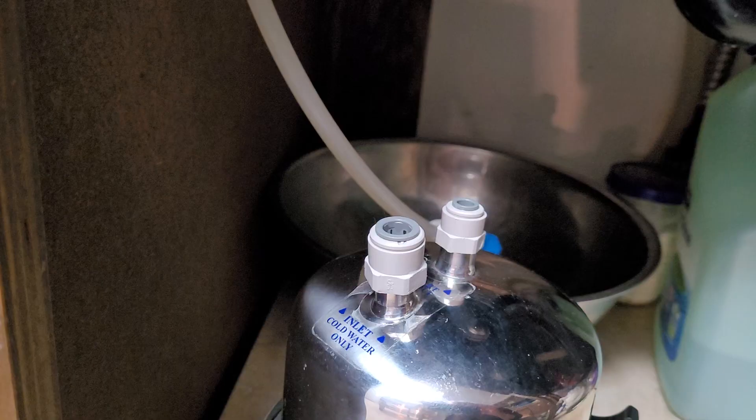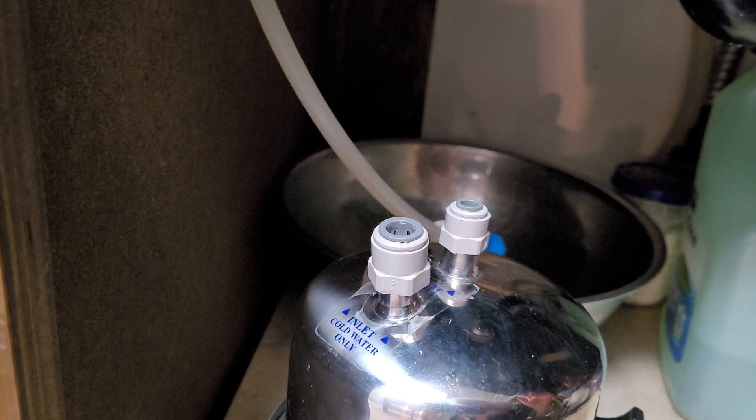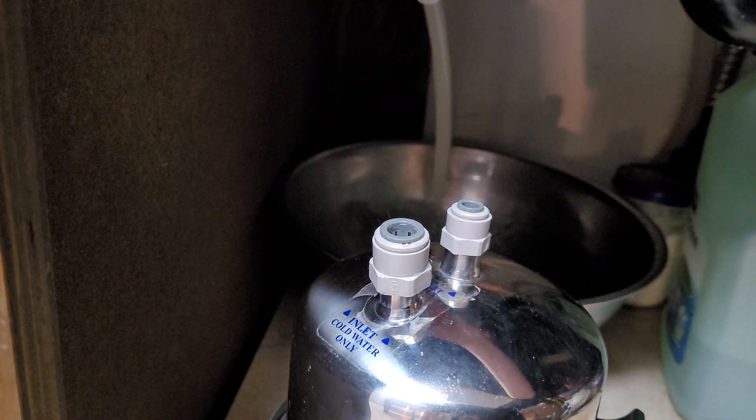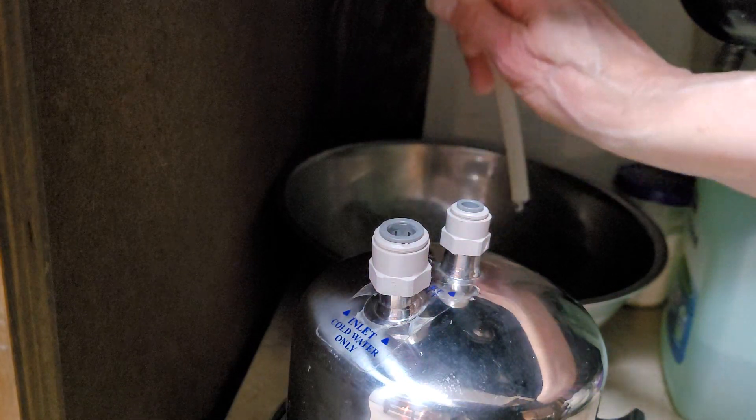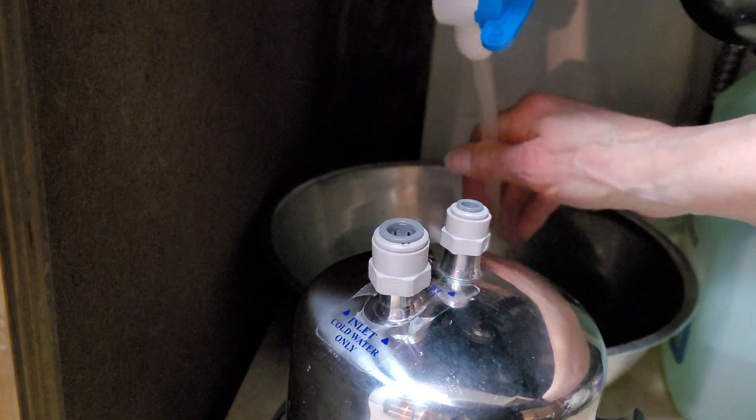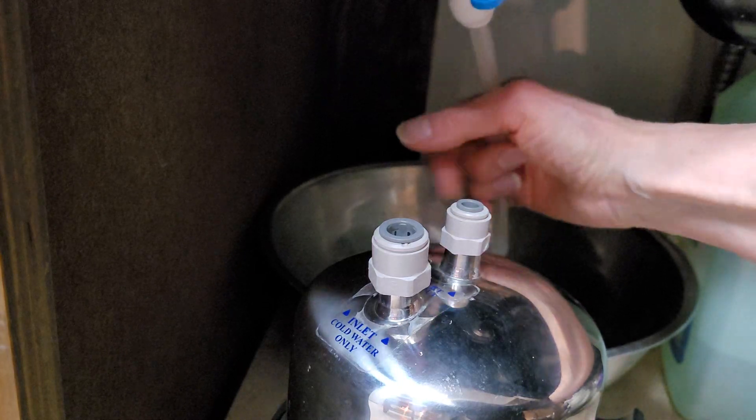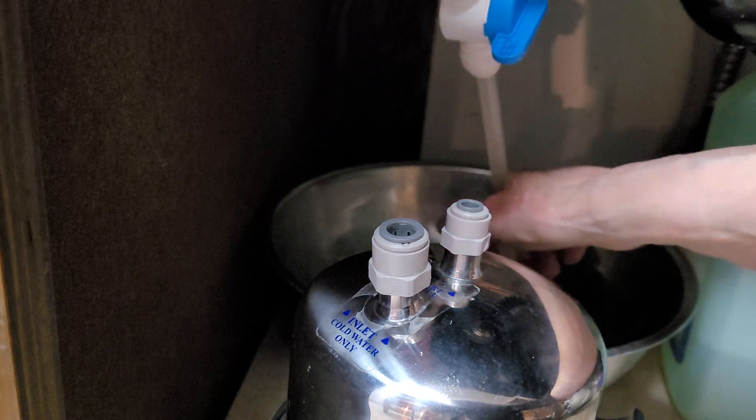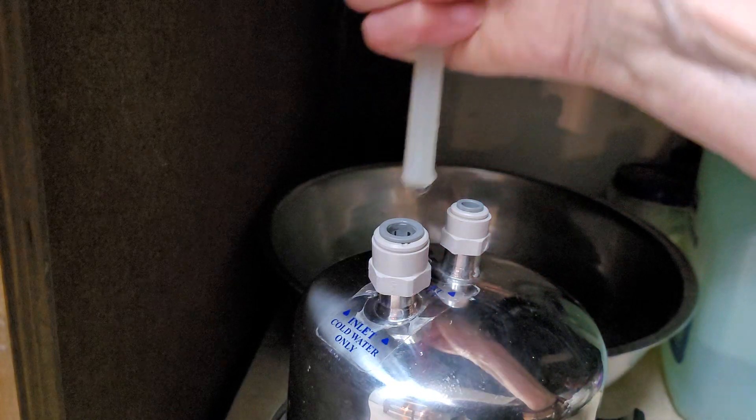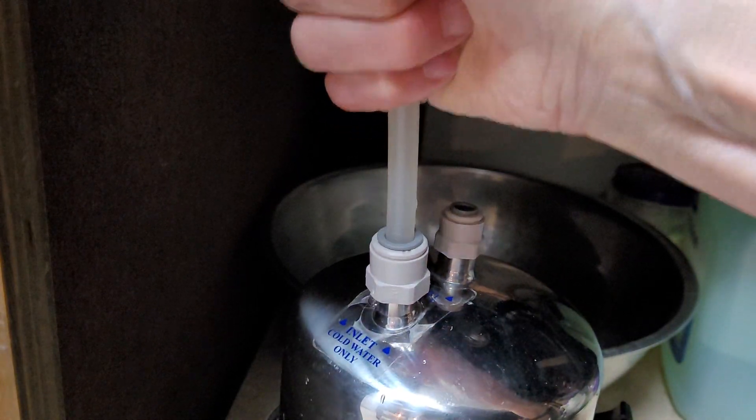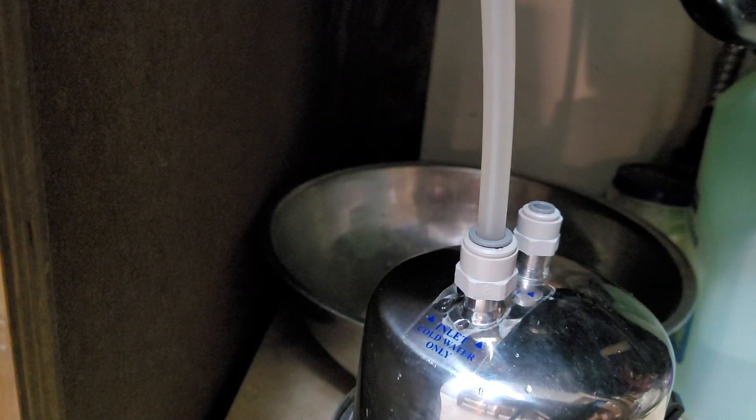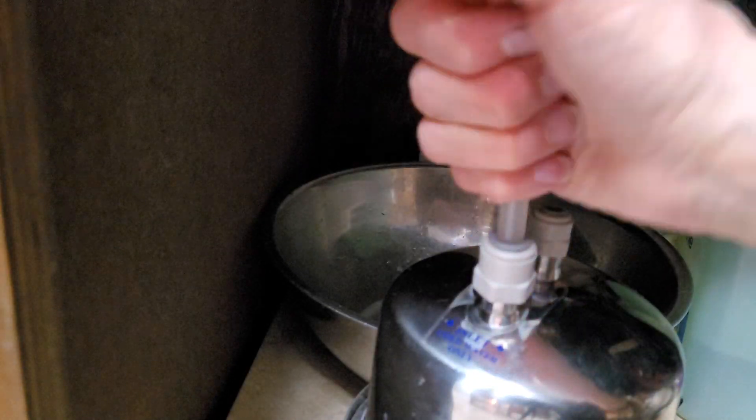Next up, reattaching the tubing to the unit. We're going to reattach our tubing from our source. This is pretty straightforward, but you need to get your tubing firmly seated into this. You can really feel it when it does get seated. You want to just push down really hard. Wipe up any drips, and then you can see that's not going anywhere.